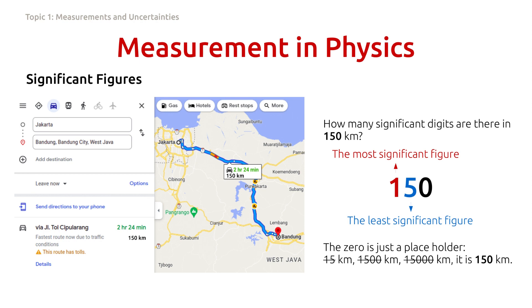Since the 5 is uncertain, and this is in the tenth place, the uncertainty of this whole number is 10 kilometers. In other words, the distance from Jakarta to Bandung is 150 kilometers within an accuracy of 10 kilometers.